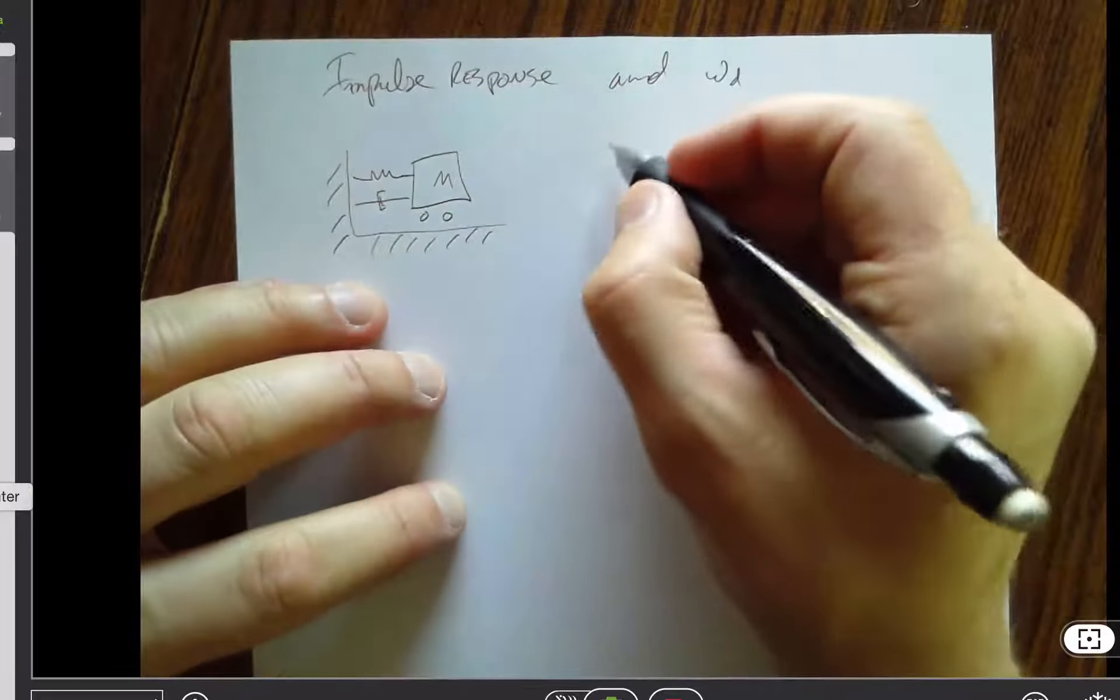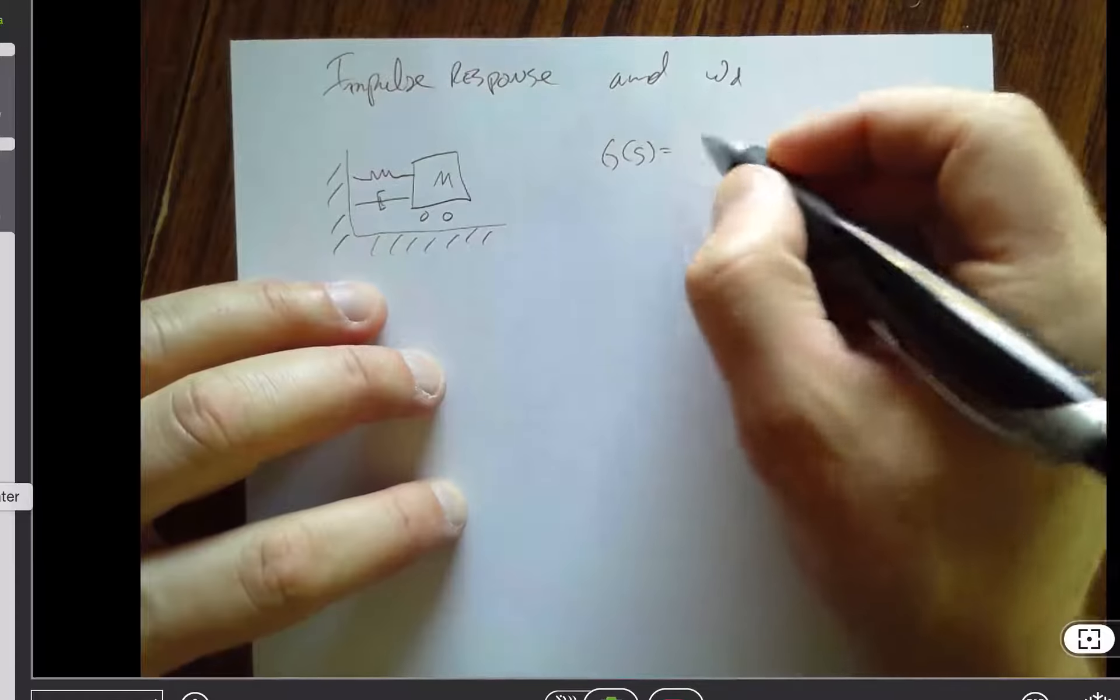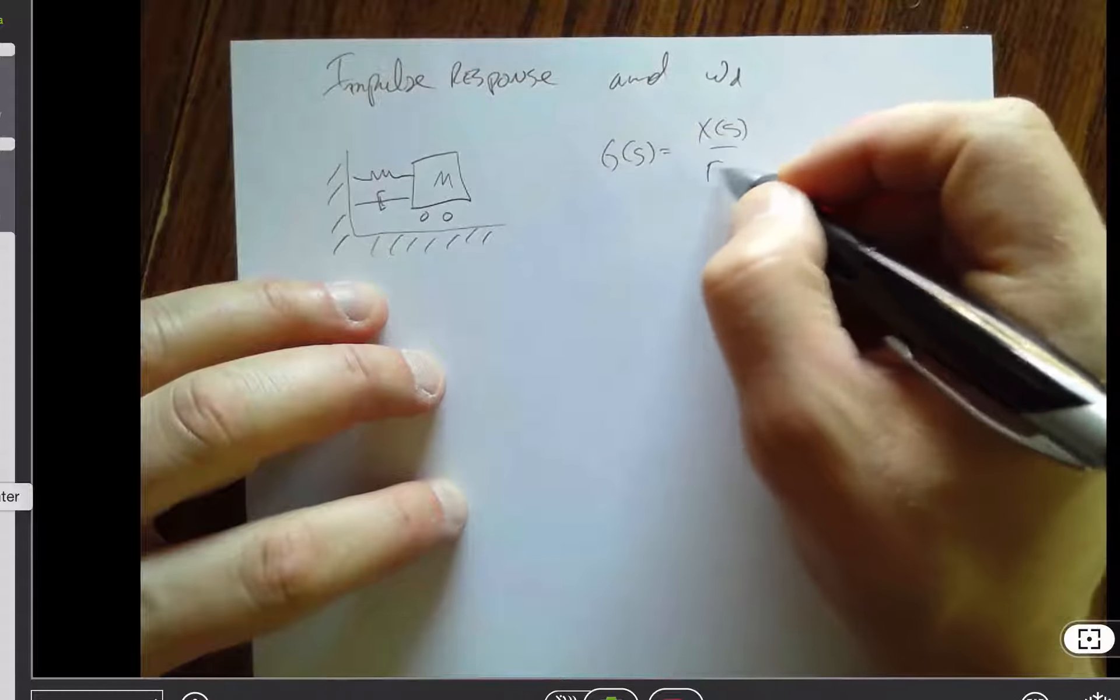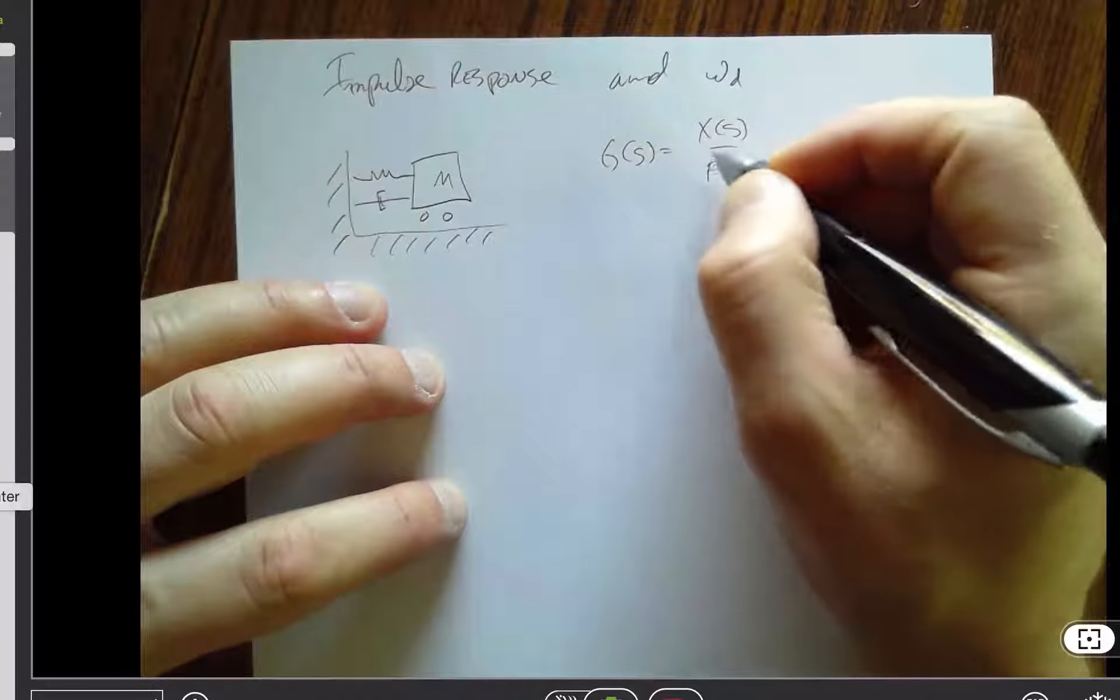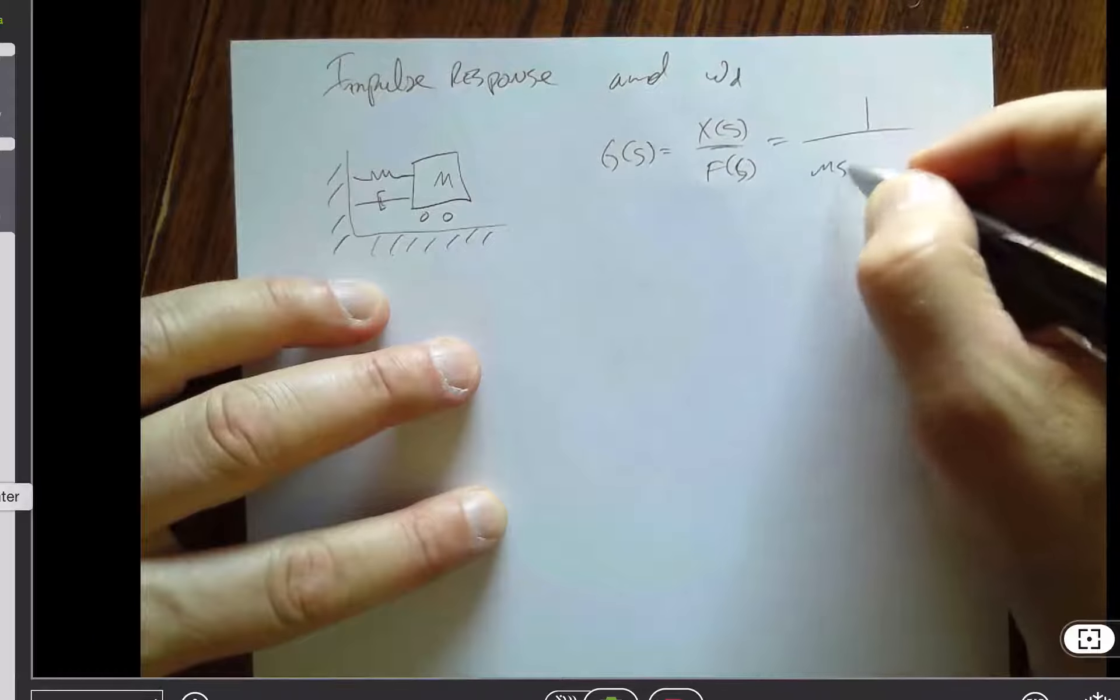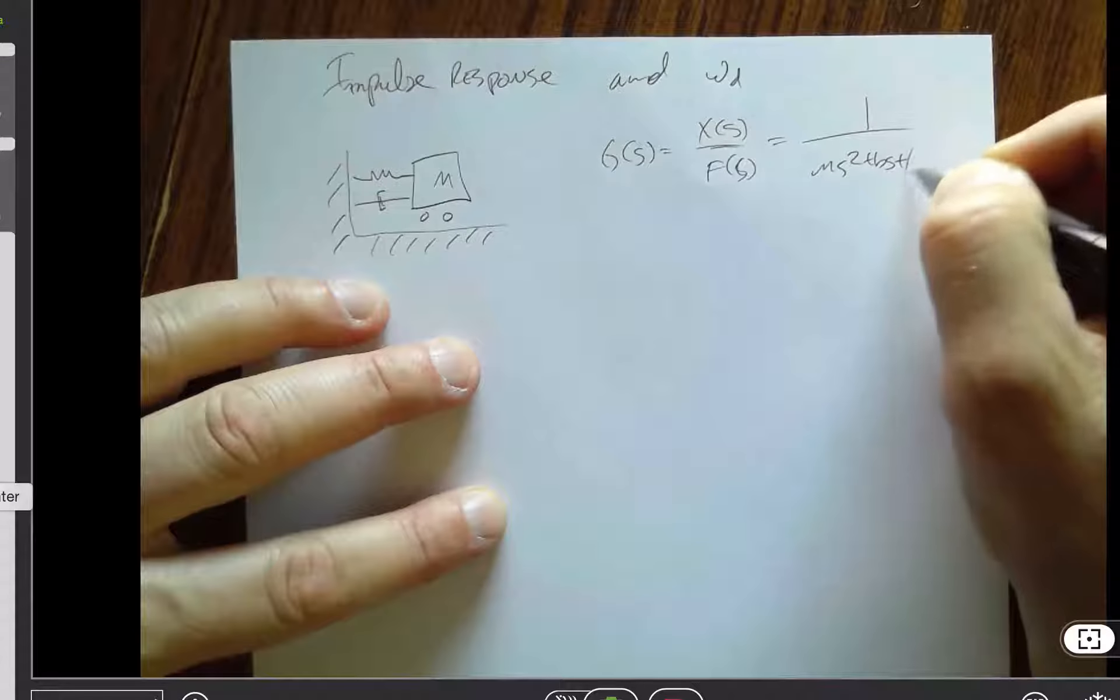Actually, I forgot that I had already made myself up a little starting point. So we talked about how x of s, which is equal to x of s over f of s, is 1 over ms squared plus bs plus k.